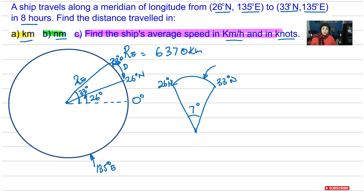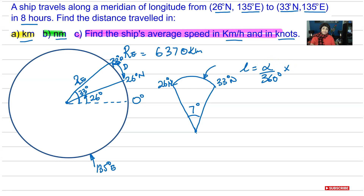And you are looking for the arc length. The formula for arc length is: the angle alpha divided by 360, because you have 360 degrees in the whole circle, times the circumference, which is 2 times pi times the radius of the Earth.